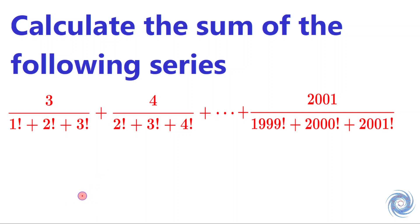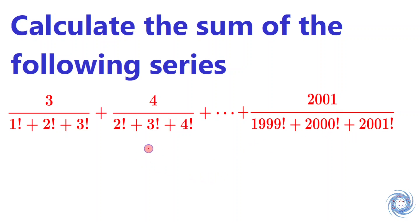The question is: calculate the sum of the following series. The series is given by 3 over (1 factorial plus 2 factorial plus 3 factorial) plus 4 over (2 factorial plus 3 factorial plus 4 factorial), and the sum continues up to a final term. We have to calculate the sum of this series.